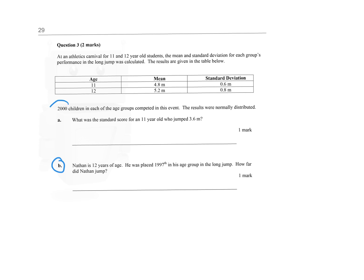They said up here there's 2,000 kids. So if you work out what percentage he is, he came 1997 out of 2,000, and if you times that by 100 to get a percentage, you end up seeing that it's 0.15%.